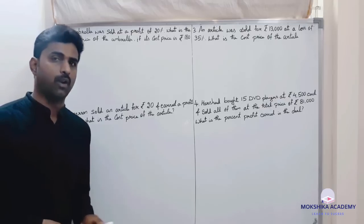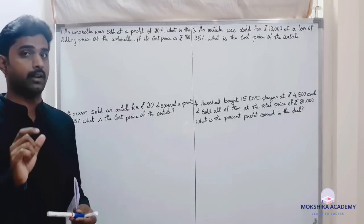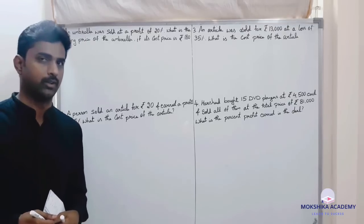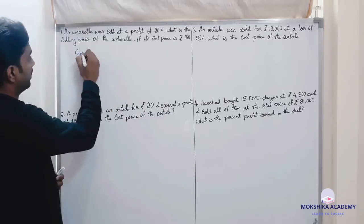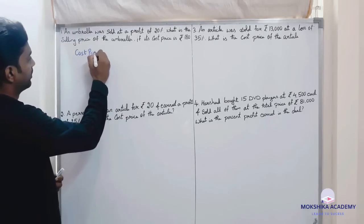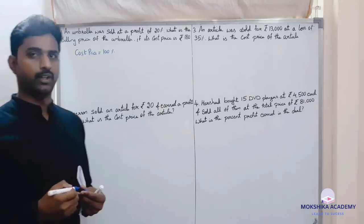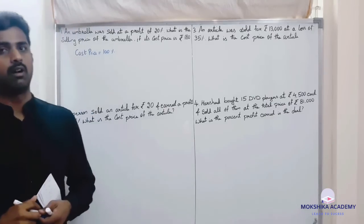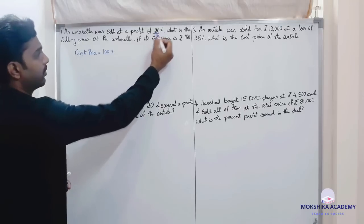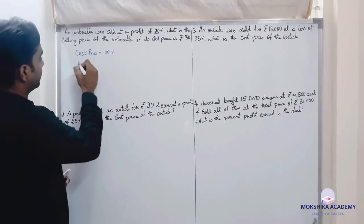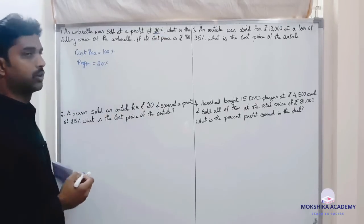Profit and loss percentage and calculations: 100 percent. Always remember 100 percent, that is cost price. Cost price is 100 percent. So because only profit, profit is 20 percent.